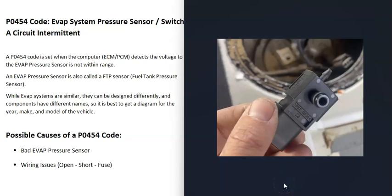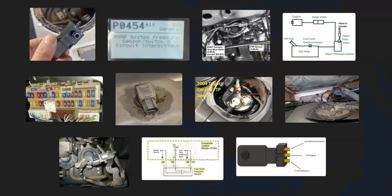If the wiring looks good, it's possible the fuel tank pressure sensor has just gone bad. The sensor works off of pressure, so if you have a pump and can change the pressure, you can read the change in voltage coming out of it and see if it matches what it's supposed to. There are some good YouTube videos on how to test these. Basically, the main causes of a P0454 code are either a bad EVAP pressure sensor or a wiring issue.